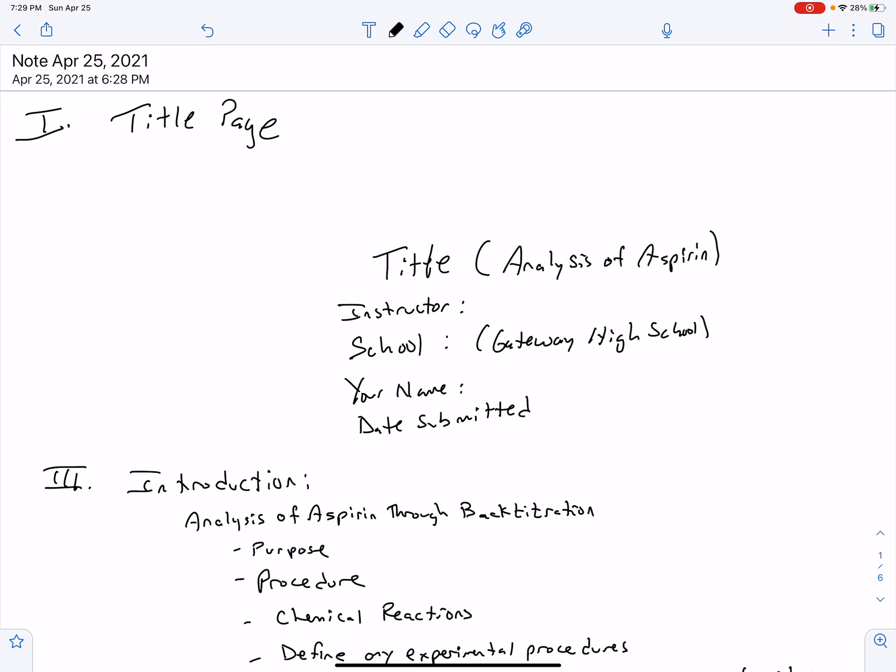The first thing we always have with the formal lab is a title page. Don't forget your title page is a singular page. That page has the title of the lab, analysis of aspirin, the instructor's name, the school Gateway High School, your name, and the date that it was submitted.